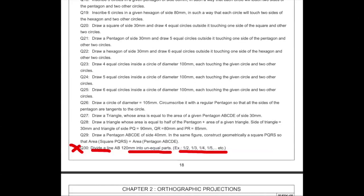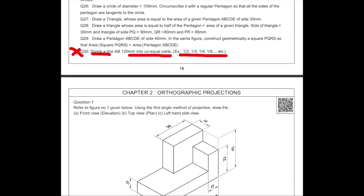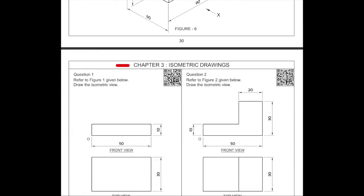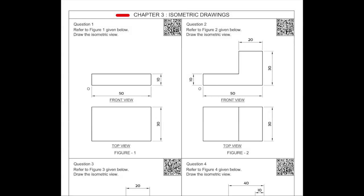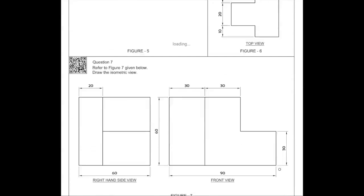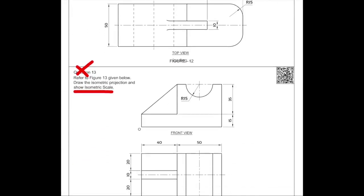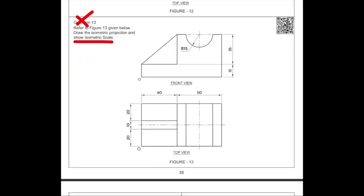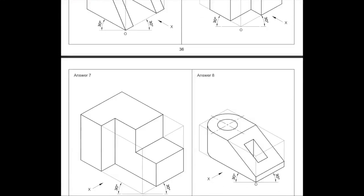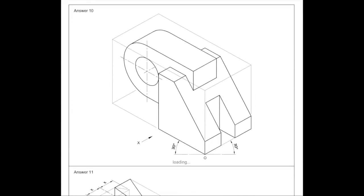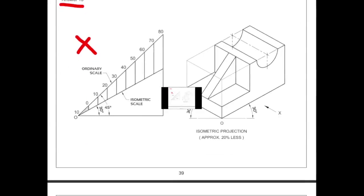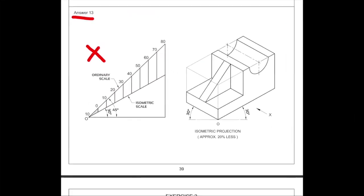In isometric, we don't have isometric projection — that means how to draw isometric using the isometric scale is not there. That is question number 13, so you can remove it. It is with the scale like this, and you don't have this in your portion for 2021.